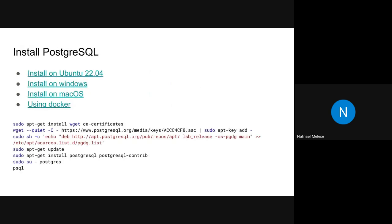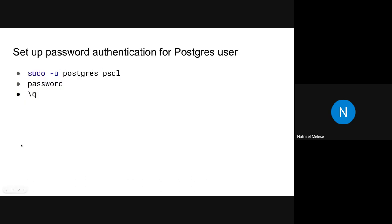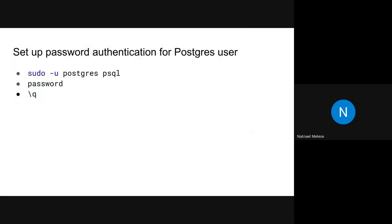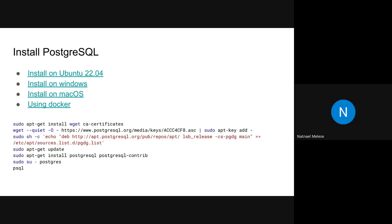If you are on Ubuntu, you can follow the link in the slide. You can also apply the terminal commands provided. You can also use Docker to dockerize your database and connect to it. On macOS, you can install it using the link. On Ubuntu specifically, it will be installed with an empty password, so you'll need to type the provided commands to change your password. The backslash q command represents quit. I'll demonstrate that part for you.